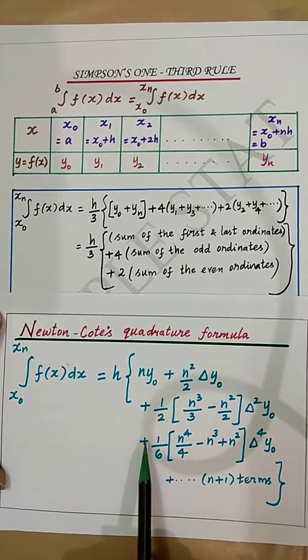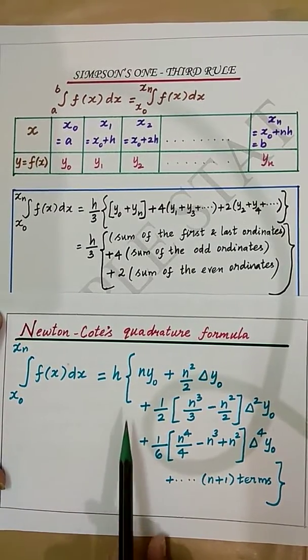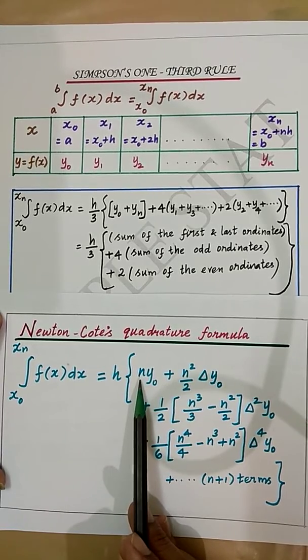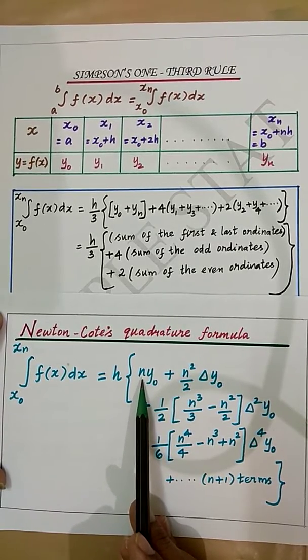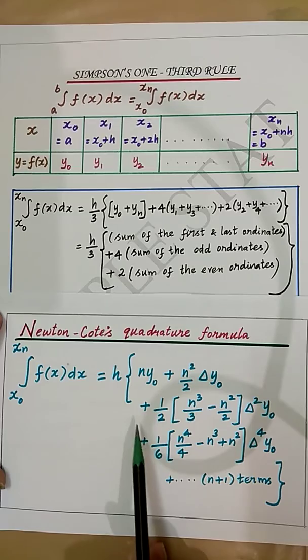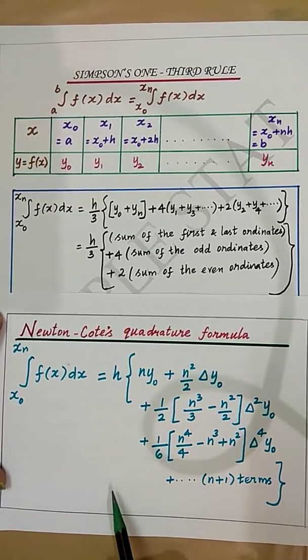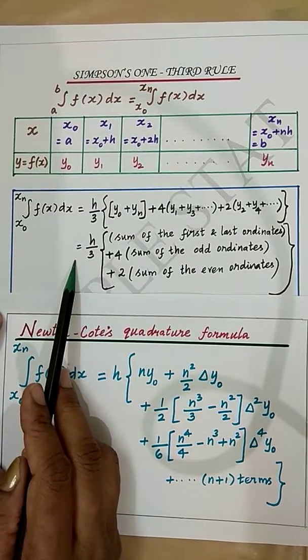By substituting n equals 2 in this formula and neglecting third and higher order differences, we get Simpson's one-third rule.